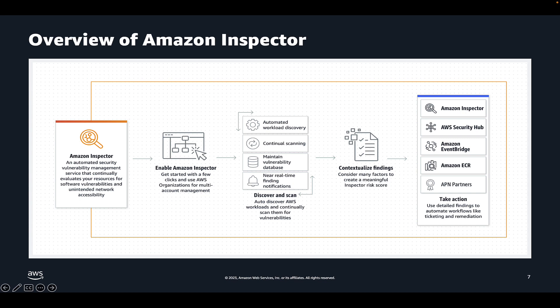With the expanded capability to search for CVEs related to Linux and container images using Inspector, you can retrieve the details for any vulnerabilities stored in Inspector's vulnerability database and covered by Inspector's scanning engine by simply providing a common vulnerability and enumerations ID, or CVE. For example, in this demo we're going to use the ID CVE-2021-44228. This allows customers to confirm the CVEs covered by Inspector's scanning engine and do preliminary research on a CVE.